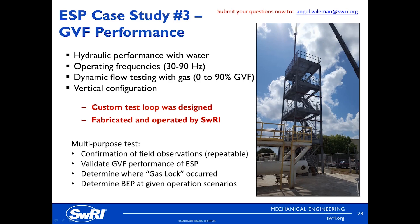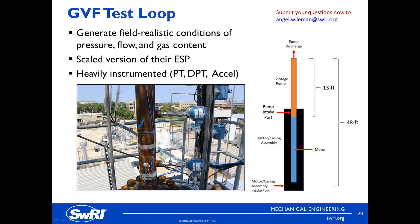The manufacturer reached out to SwRI to help validate this technology using a custom test facility. The GVF test loop was designed to generate field-realistic conditions of pressure, flow, and gas content on a scaled version of their ESP. The overall dimensions of the ESP including motor and casing was about 48 to 50 feet tall, with the actual pump component being about 13 feet. The loop was heavily instrumented and allowed for measurements of pump pressure and temperature gain at each pump stage, as well as vibration at each operating condition, with accelerometers strategically placed on the pump assembly.